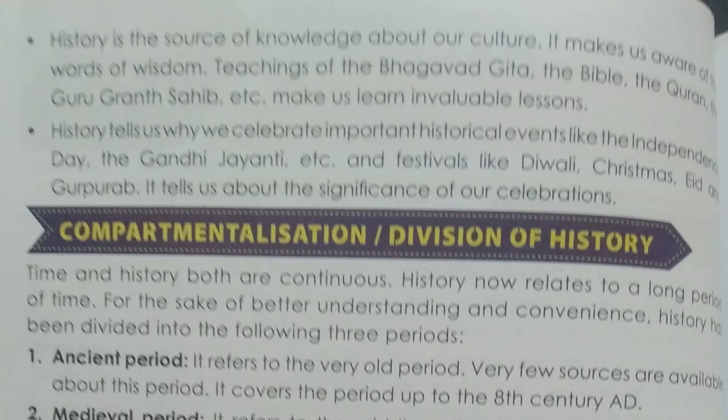Compartmentalization or division of history. Time and history both are continuous. History relates to a long period of time. For the sake of better understanding and convenience, history has been divided into the following three periods. The first one is the ancient period, which refers to the very old period. Very few sources are available about this period, and it covers the period up to the 8th century AD.